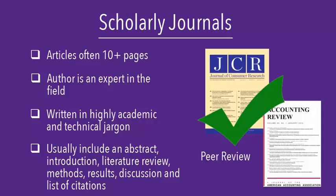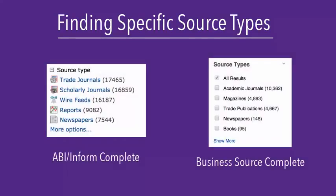Scholarly articles are great sources to use when writing research papers. You can limit to a specific type of article in the library's article databases. Watch the Using ABI Inform Complete and Business Source Complete video to learn more. The type of source you need will depend on the requirements of your assignment. Check with your professor if you're not sure which source types you should be using.